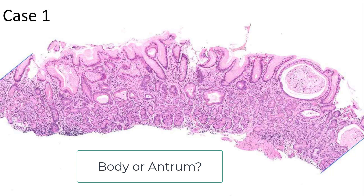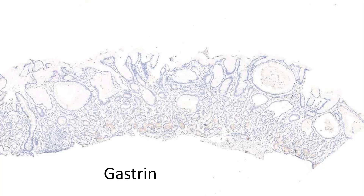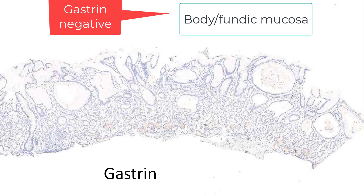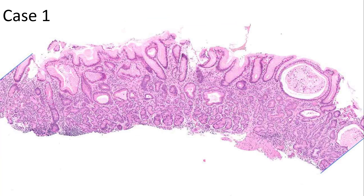Remember the mantra: in autoimmune gastritis, it's the body fundic mucosa that is messed up — the antrum looks quite normal. So how do you tell between body fundic mucosa and antrum mucosa? Here's the next best stain after sliced bread, and that stain is gastrin. Gastrin is positive in the antrum and essentially negative in the body fundic mucosa. This fragment is negative and therefore it is body fundic mucosa. So once we've decided it's body fundic mucosa, let's list out the features. It's gastric body fundic mucosa with chronic gastritis, superficial and deep.